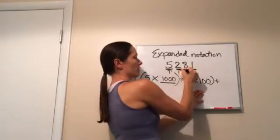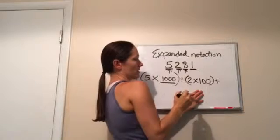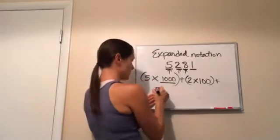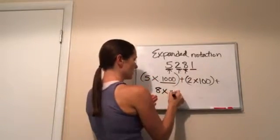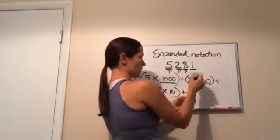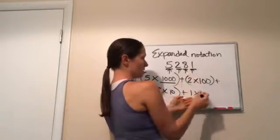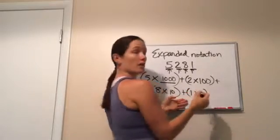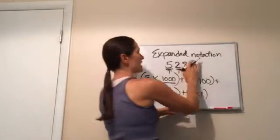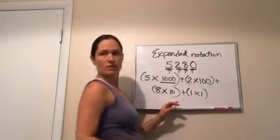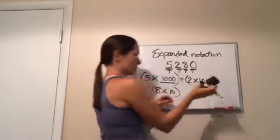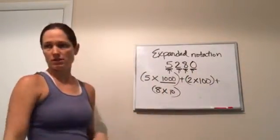Plus the eight. Eighty. Eight times ten. Very good. Plus one times, what place is it in? One. One. Very good. That's your answer. Now what if this had a zero? You just don't do it. Yeah. You would just answer this, this, this. Okay, now watch this.